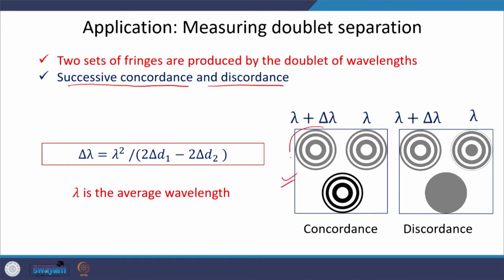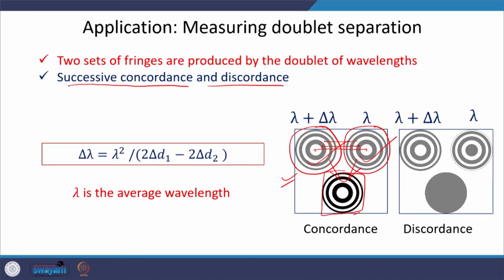In this situation, the dark fringe becomes darker and the bright fringe becomes brighter — better contrast results. This is shown in the figure: for the first wavelength this is the circular ring pattern, for the second wavelength this is the ring pattern, and when the micrometer is adjusted so that the centres coincide and rings align, the overlap produces a resultant with darker darks and brighter brights. This is called concordance.